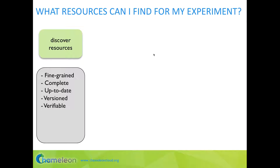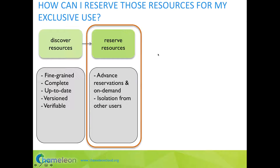Each bare metal node of the Chameleon testbed is described precisely in a resource registry. Each official image provided by the Chameleon testbed includes CC-checks, a tool that verifies that the resource matches its description. Chameleon supports getting those resources on demand. However, if you want to reserve a very large partition such as the whole testbed, you typically need to request resources in advance. Resource requests are fine-grained so that you can request them by node.